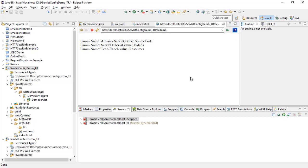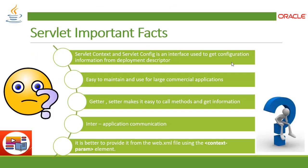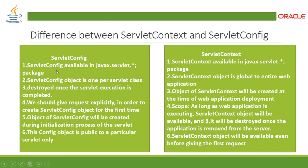This is the execution of the Servlet Config API. So far we have learned about the ServletConfig and ServletContext interfaces. Now let's see some important facts. Both ServletContext and ServletConfig are interfaces used to get configuration information from the deployment descriptor and define initialization. They are easy to use and maintain for large commercial applications. Getters and setters make it easy to call methods and get or update information over time.